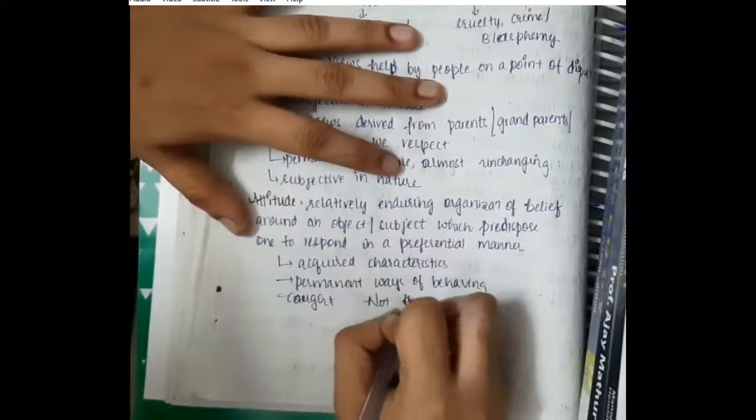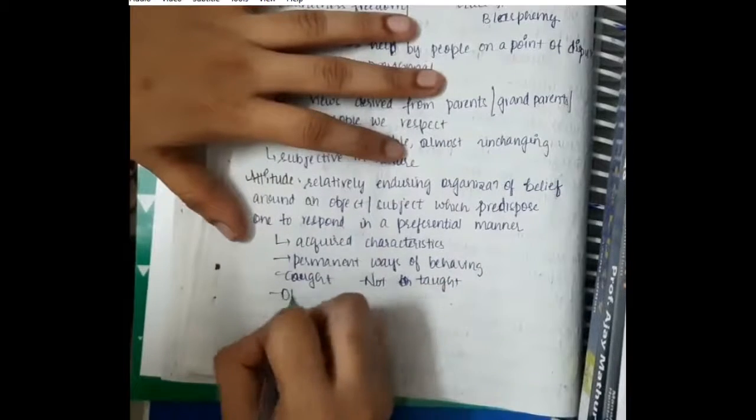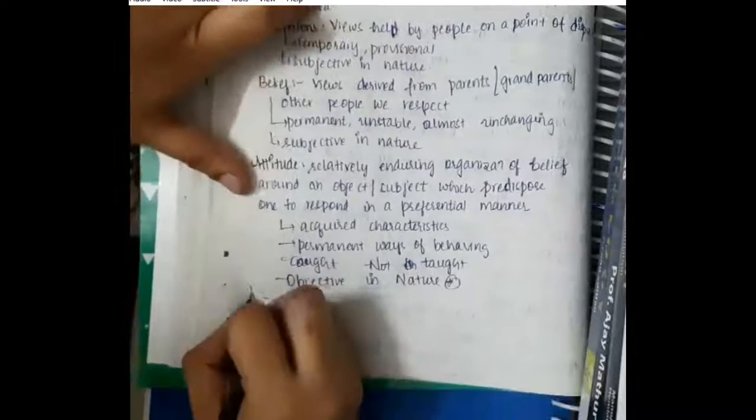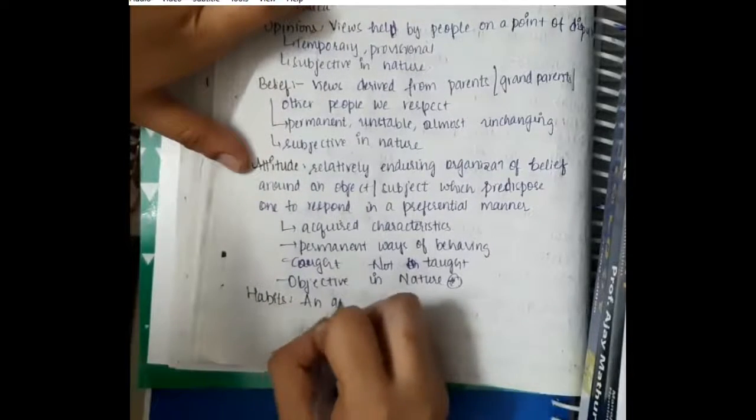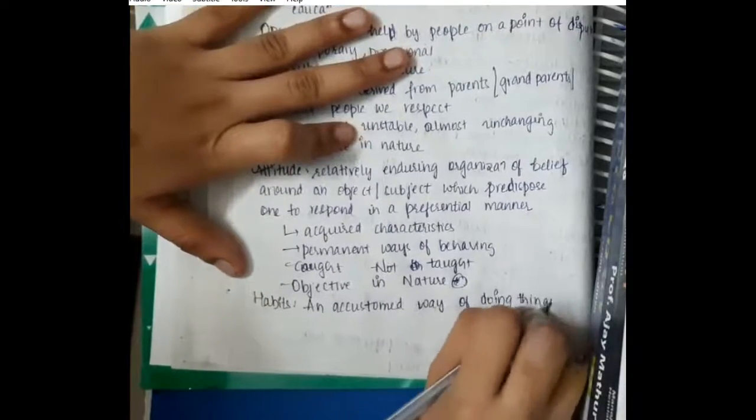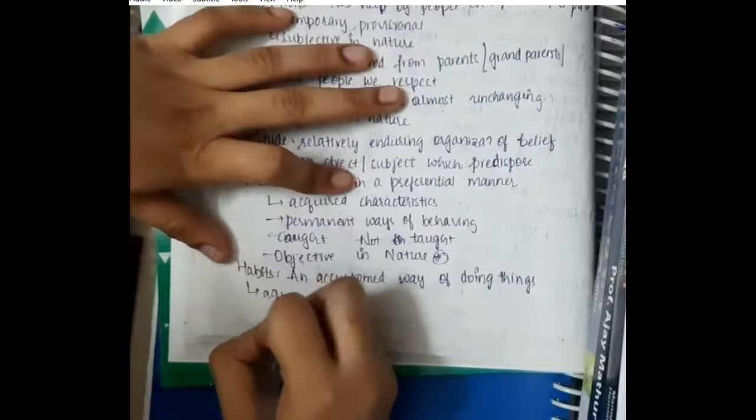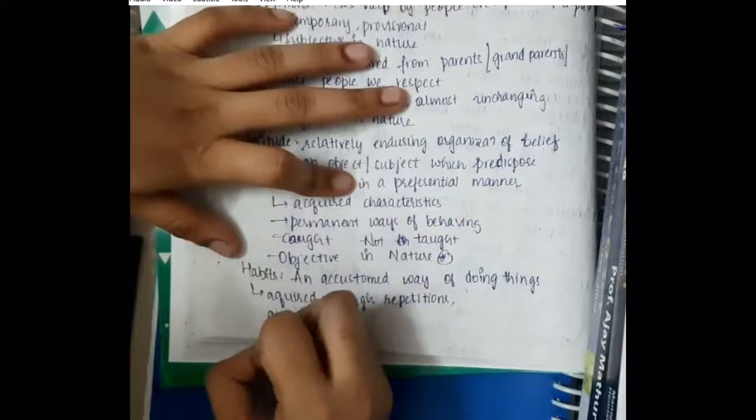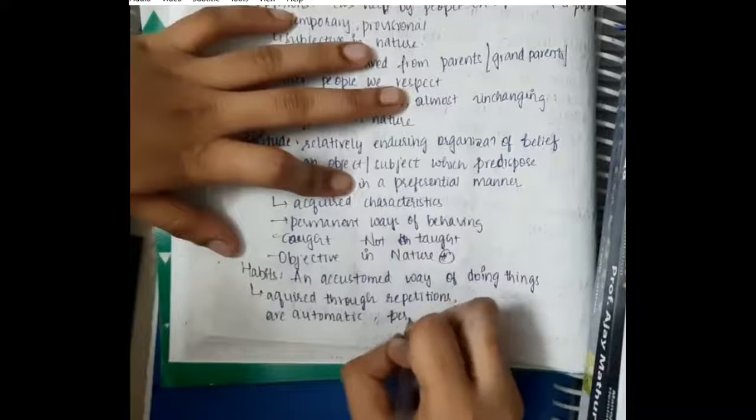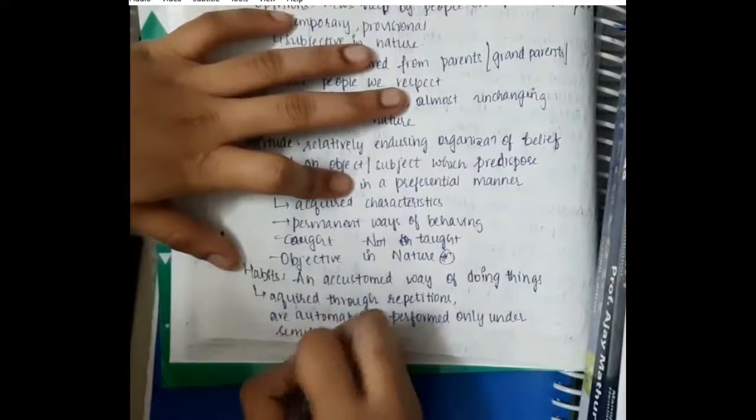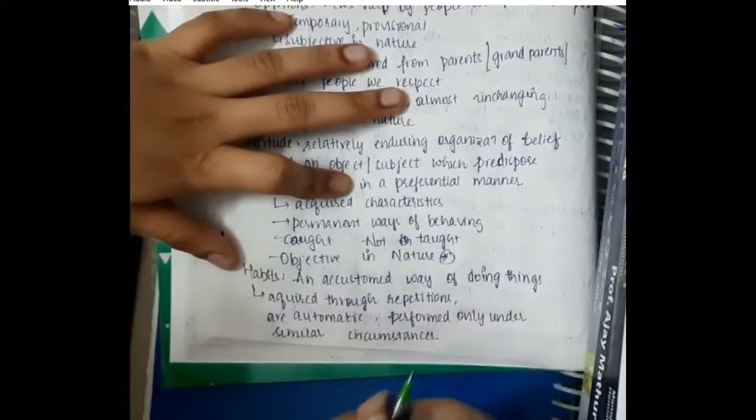Then we have habits. Habits are an accustomed way of doing things. They are acquired through repetitions. These habits are automatic and performed only under similar circumstances, like eating habits, drinking habits, or smoking.